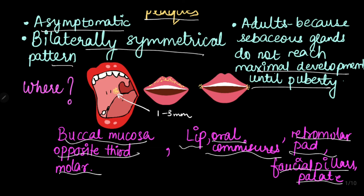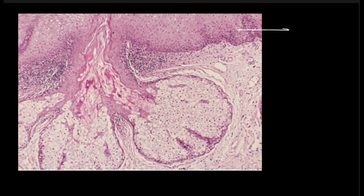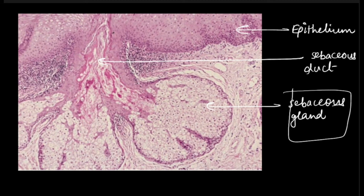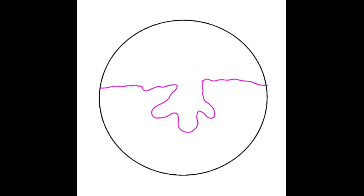Coming to the histopathology: here is the epithelium, here is your sebaceous gland, and this is your sebaceous duct. These sebaceous glands are usually superficial and they may consist of one or more ducts which open on the surface of the mucosa. Apart from that, these sebaceous ducts may also show keratin plugging, as you can see here. If this comes for an examination, this is how you can draw the diagram.